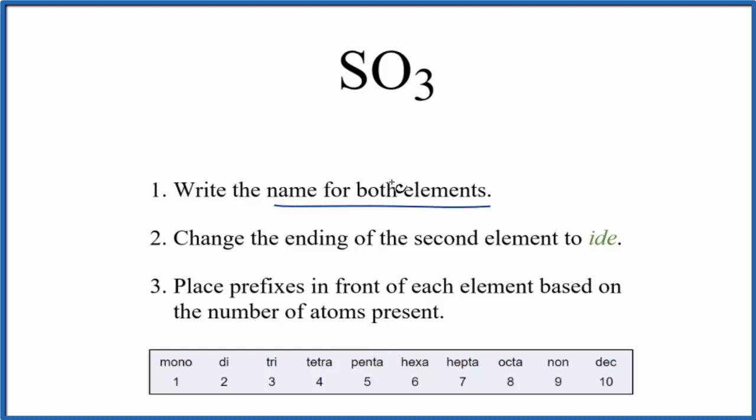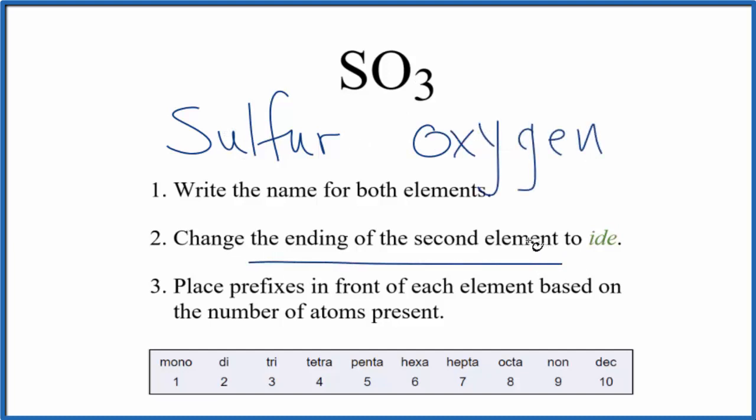So first, we write the name for both elements. We have sulfur, and then we have oxygen. Next, we're going to change the ending on the second element, that's the oxygen, to ide. So we take and write ide, and at this point, we have the name sulfur oxide for this SO3.